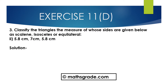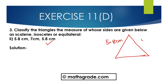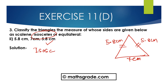Part b: 5.8cm, 7cm, and 5.8cm. The measures of the sides are given as 5.8cm, 5.8cm, and 7cm. In this triangle, two sides are equal — both are 5.8cm. We know any triangle whose two sides are equal is called an Isosceles triangle. So this is an Isosceles triangle.